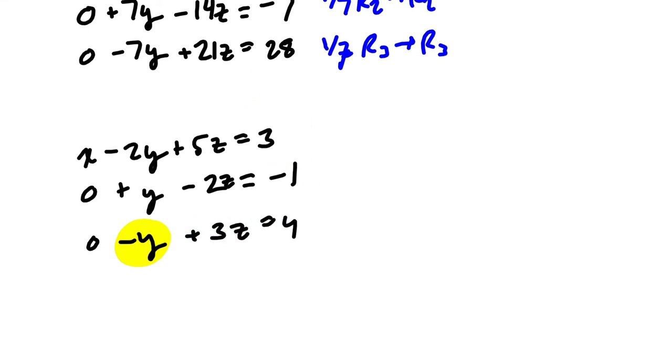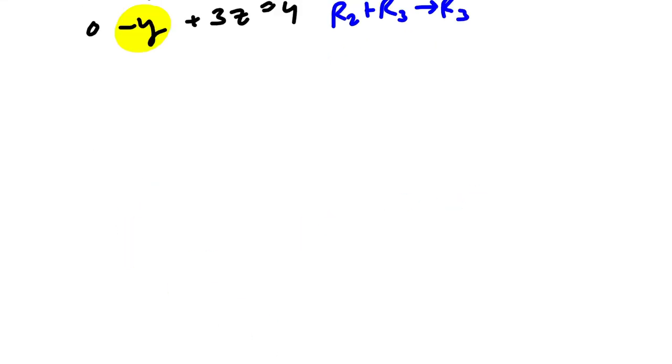So I think the easiest way to try that is to do the second row plus the third row and put the result in the third row. So that's going to work because I have the opposites right here. So let's rewrite it. x minus 2y plus 5z equals 3. Second row, 0 plus y minus 2z equals negative 1. Now, if I add y and negative y, that's a 0. So we have two 0s. And then negative 2z plus 3z, that worked out nicely, is just z. And then negative 1 plus 4 is 3.